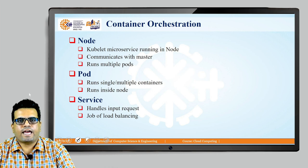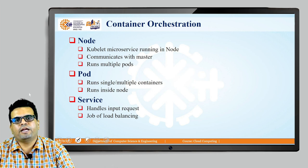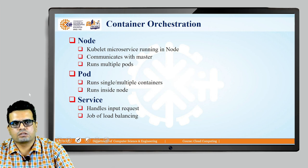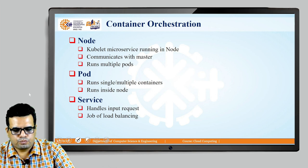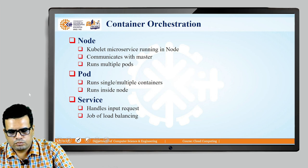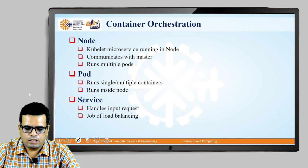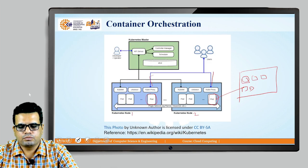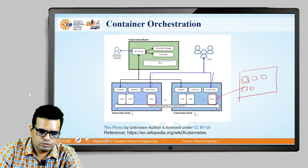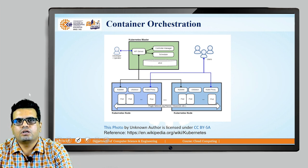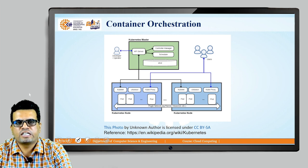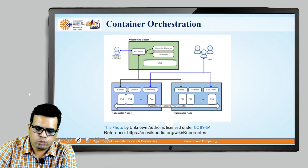A service actually handles the incoming requests and may do the job of load balancing for us. This is the architecture of a service — here we have a Kubernetes master and then there are two Kubernetes nodes: Kubernetes node 1 and Kubernetes node 2.